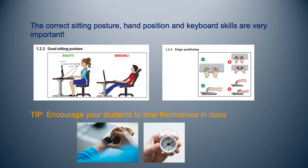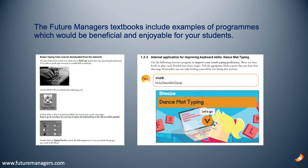Students need to know the layout of the keyboard and where the keys are allocated by heart. All 10 fingers must be used while keying in a document. The correct sitting posture, hand position, and keyboard skills are very important. Students should time themselves in class and make use of a stopwatch or timer so that they get used to working with time constraints, increasing speed and not wasting time unnecessarily.